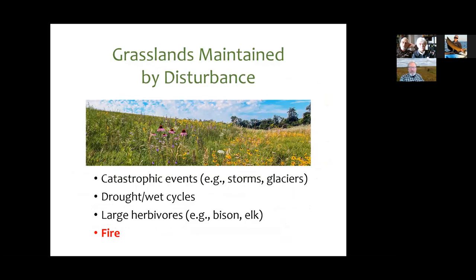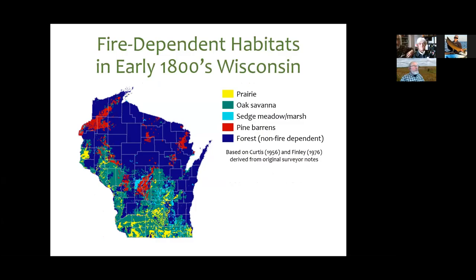Really the dominant type of disturbance that keeps these prairies, oak savannas, and oak woodlands in place is fire — and that has been true historically as well as in recent times.